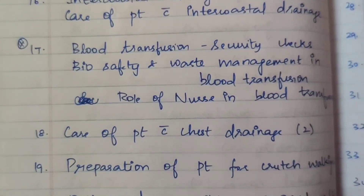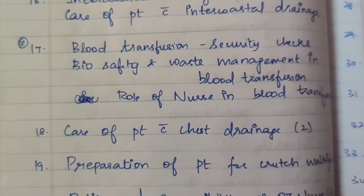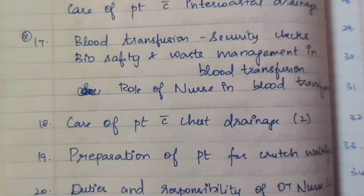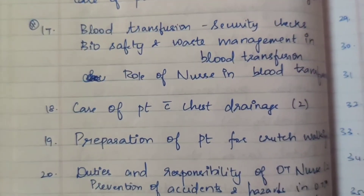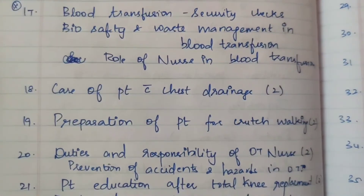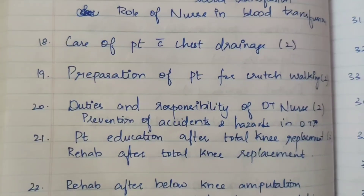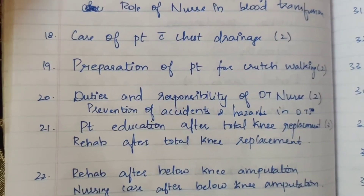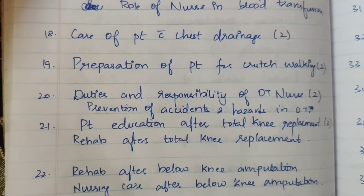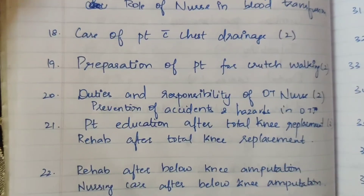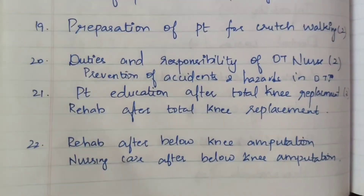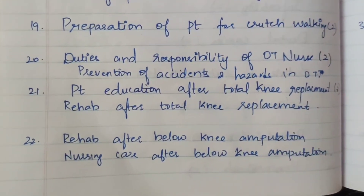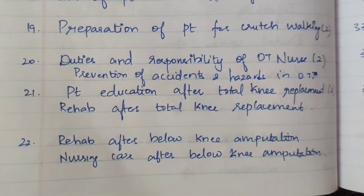Blood transfusion security checks, biosafety and waste management in blood transfusion, role of nurse in blood transfusion. Care of patient with chest drainage 2 times. Preparation of patient for crutch walking 2 times. Duties and responsibilities of OT nurse 2 times. Prevention of accidents and hazards in OT. Patient education 2 times. Patient education after total knee replacement 2 times.